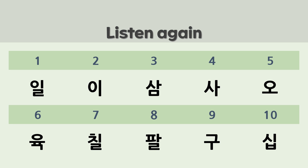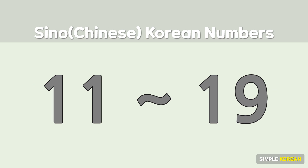You can count all numbers between 1 and 99 by combining the numbers that you have learned. Let's count 11 to 19. It's very simple. To say 11, we just say 10 and 1. This is the same up to 19.